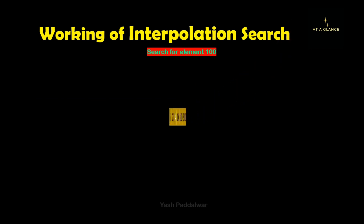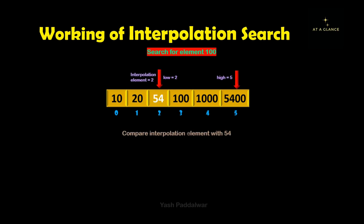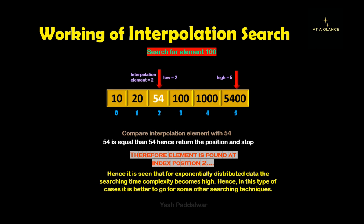Again compare the element at the interpolation position, which is 54, with the element to be searched, which is also 54. Clearly, 54 equals 54, so we return the position and stop. Hence, our element is found at index position 2. In this case where the data was exponentially distributed, we can clearly see that the number of iterations was higher compared to the previous case when the data was uniformly distributed. So here it is not recommended to use interpolation search.